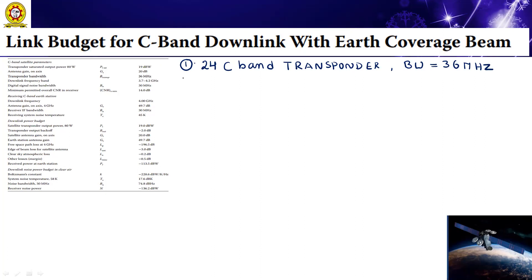The second point from this example: we have the downlink frequency. Here I am writing the conclusion points to estimate the link budget value in a simple manner. Downlink frequency equals 3.7 to 4.2 GHz. Similarly, all circular polarization.